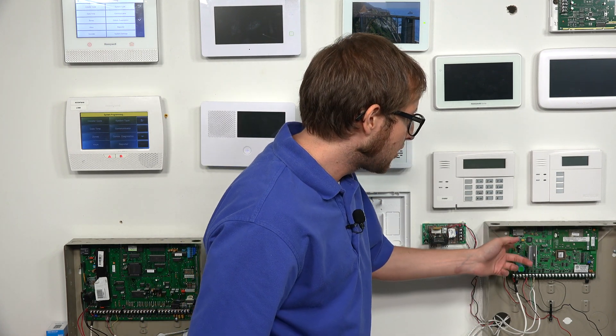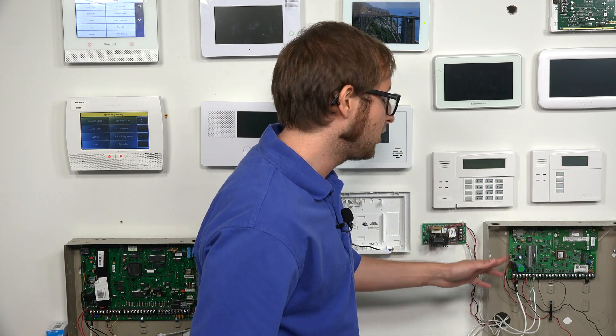Now, since we are using a 21IP system, we do have to disable the internal IP communicator. This is only for the 21IP. What you're doing is you're disabling the internet communicator so that way, you can use the cellular communicator, or the external communicator, I should say.